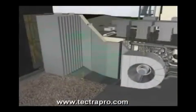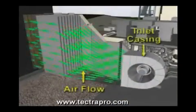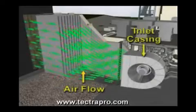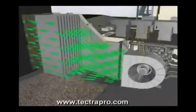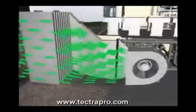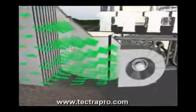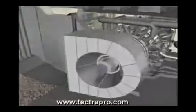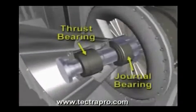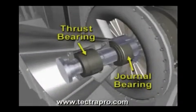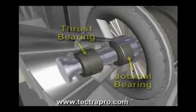The inlet casing provides a smooth transition flow of air from the filters, through the silencers and into the axial compressor. The inlet casing also provides access to the thrust bearing and the inlet journal bearing.